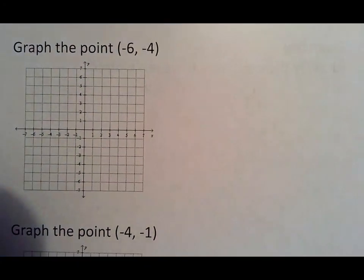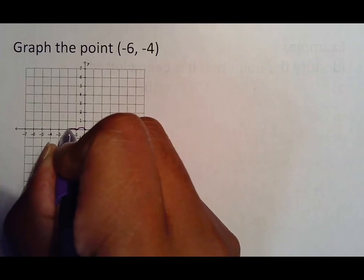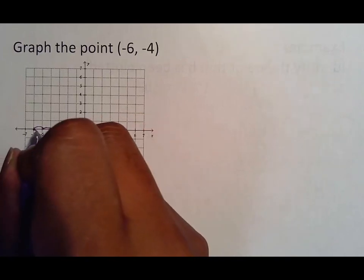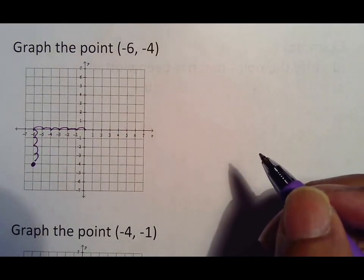Again focusing only on that 4th section because you have seen all the other ones. Negative 6, negative 4 would be 1, 2, 3, 4, 5, 6 and 1, 2, 3, 4 which puts me right there.